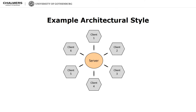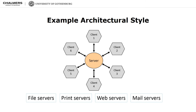Here is an example architectural style that you most probably have heard of or experimented with: client-server. This architectural style is typically used to manage computers or processes on a network. You certainly have heard of file servers, print servers, web servers, or mail servers. All those systems are instances of the client-server architectural style.